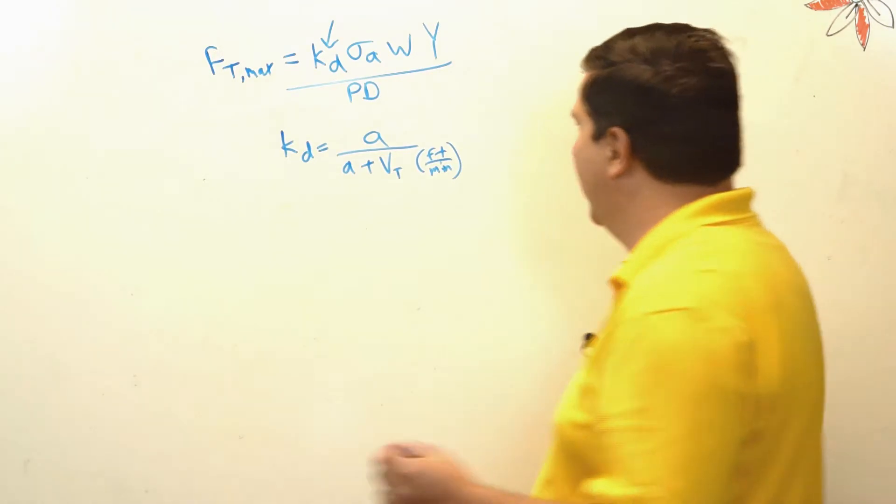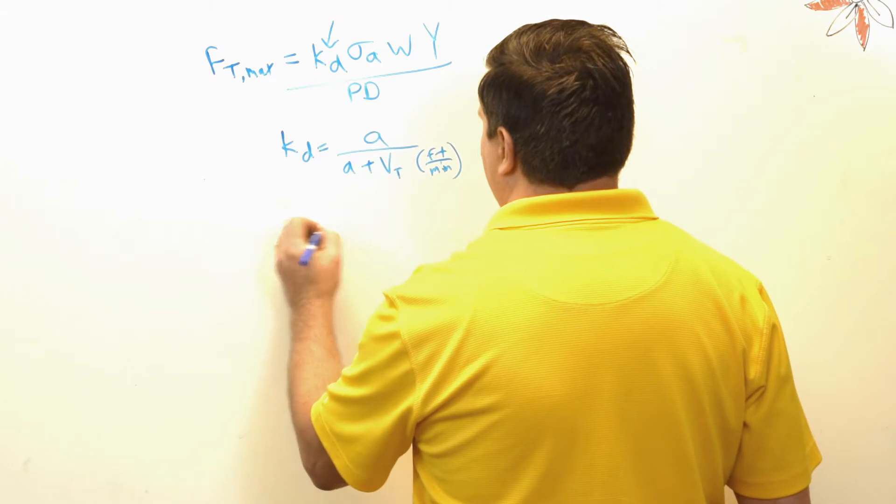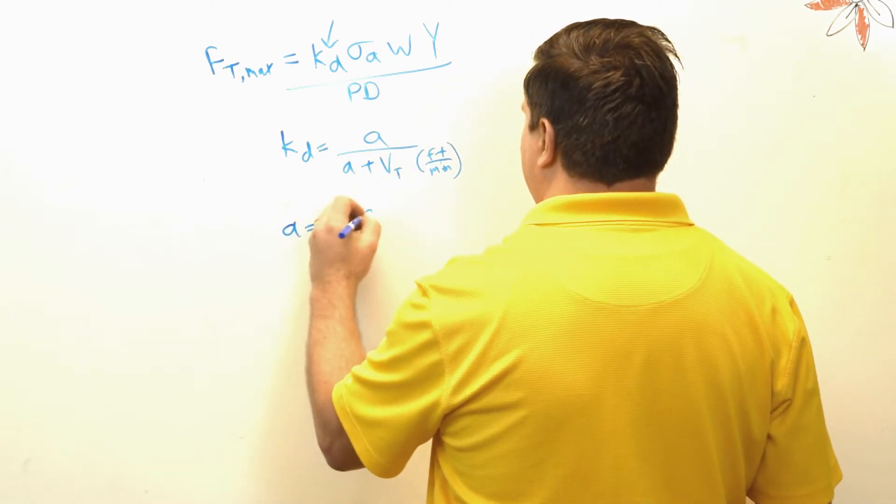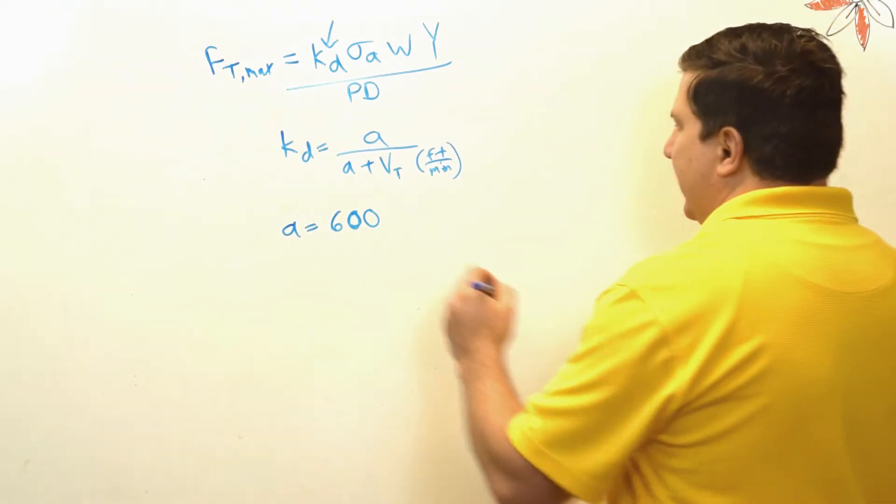So as far as a goes, a would equal 600, and this is done a lot by empirical measurements, and that is...